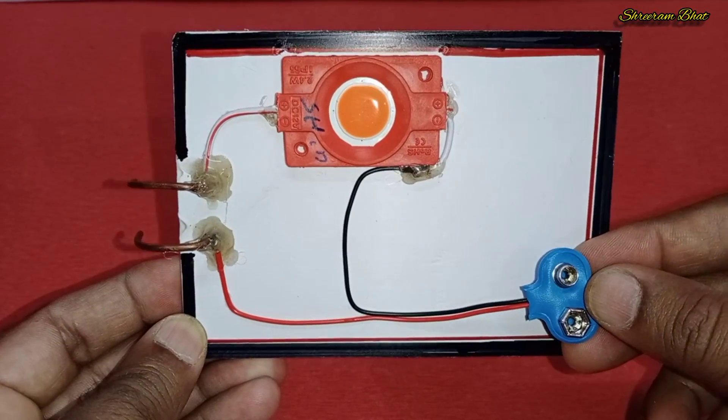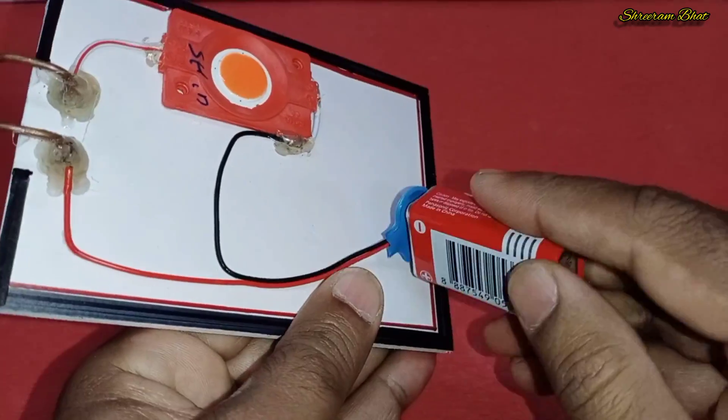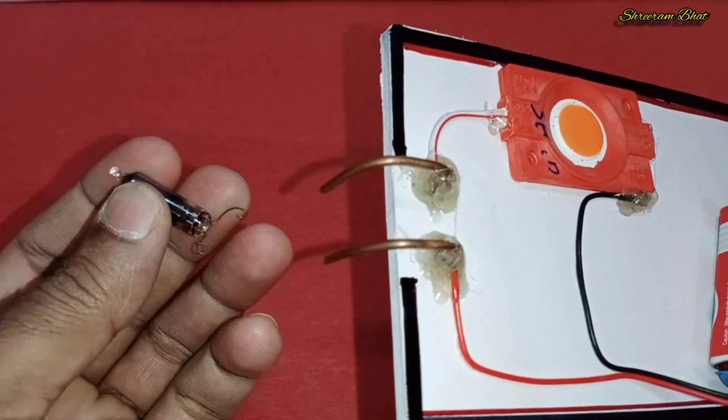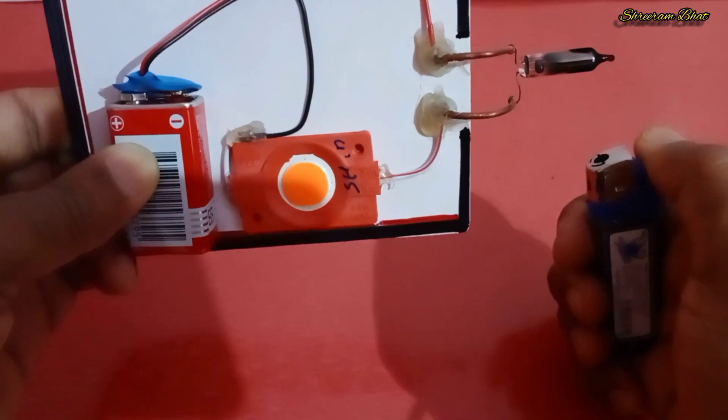We have to put a 9V battery as a source and connect the tube light starter bulb to these two terminals.